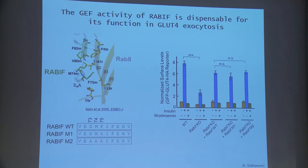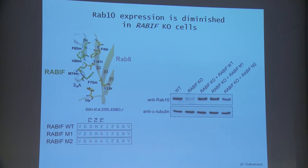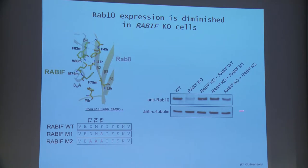If RABIF is not a GEF, what's its biological function? When we looked at RAB10 expression in RABIF knockout cells, we found that the protein disappeared. We could rescue RAB10 expression using either wild-type or the two GEF mutant forms of RABIF. The rescue of RAB10 expression correlates with the ability to rescue GLUT4 exocytosis and has nothing to do with in vitro GEF activities. Therefore, we propose RABIF functions by stabilizing RAB10 protein in GLUT4 exocytosis.